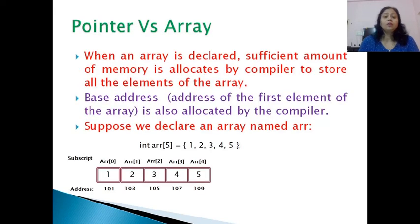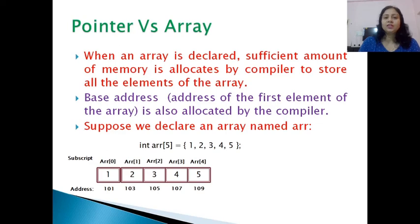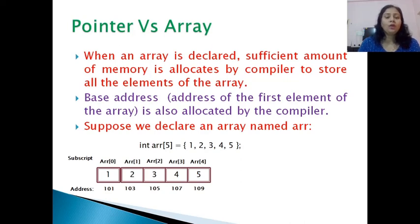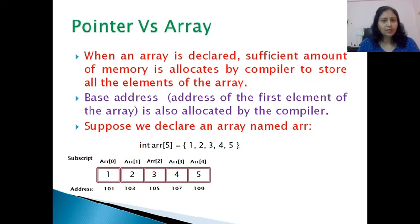First, we know that pointers are used to store the address of a variable, and we know very well that an array is a homogeneous data structure used to store elements of the same type. When we declare an array, sufficient memory is allocated by the compiler to store all the elements of the array.